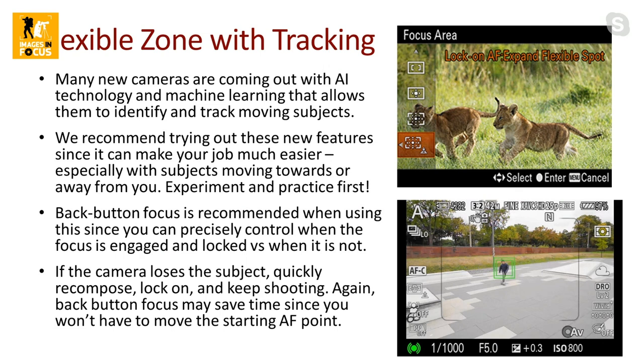As soon as I let go of the back button, it loses tracking and I have to re-engage. If a big animal moves in front of my subject, I've lost the focus — I let go of the back button, wait for things to normalize, then lock on again and start shooting. These automated modes and AI systems can be used to great effect. Play around with what your camera has, but don't do it when you're out on an important shoot — do it at home where you have time to practice, or go to the park and find some birds to practice with.